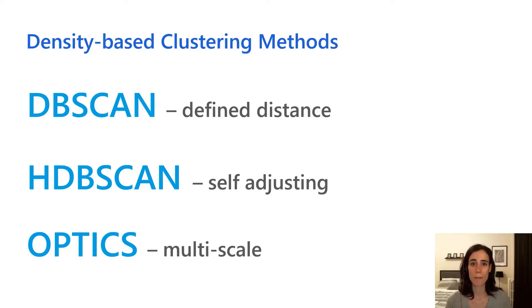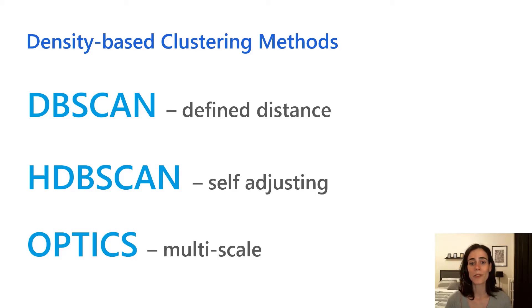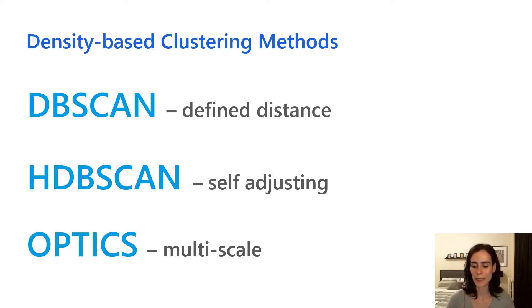There are three different methods for density-based clustering. We have DBSCAN, which is defined distance; we have HDBSCAN, which is self-adjusting; and we have OPTICS, which is multi-scale. Let's take a look at how those work.